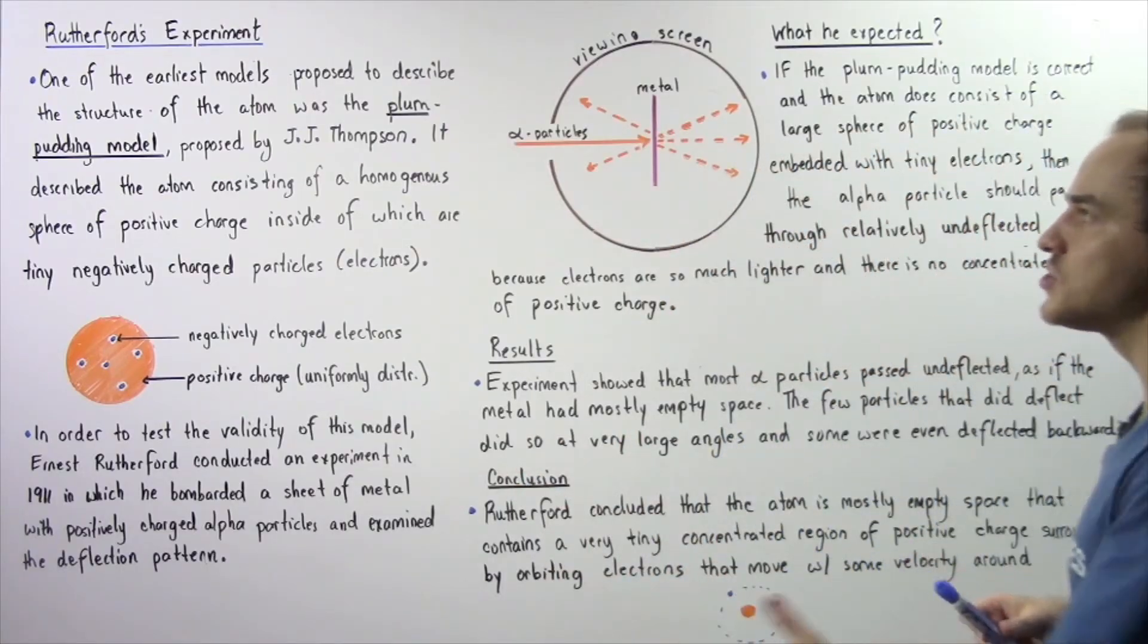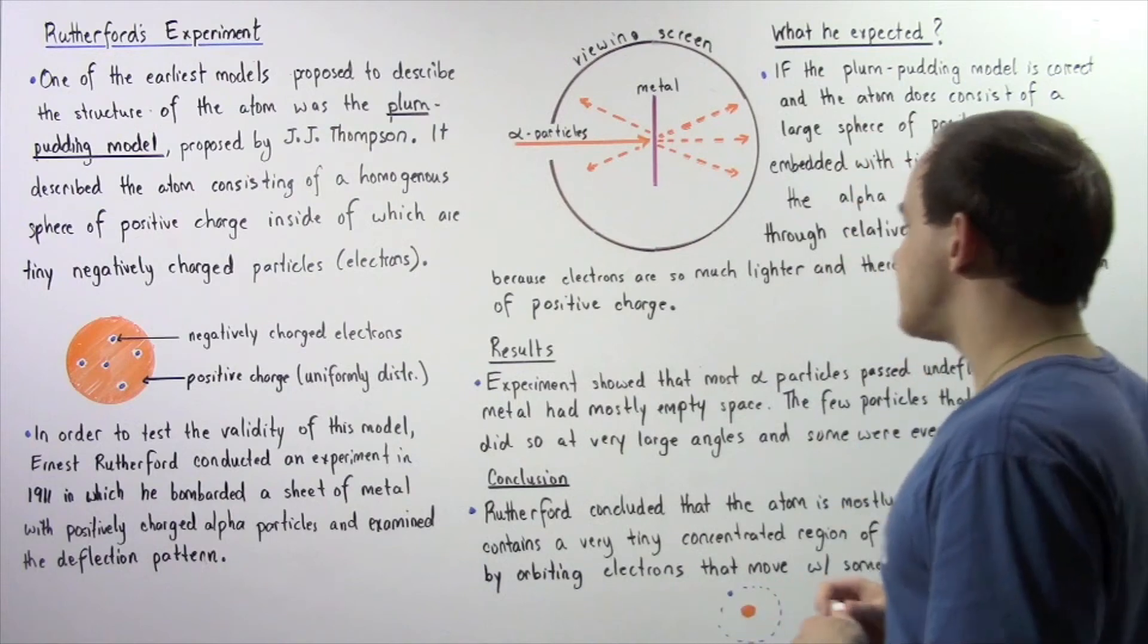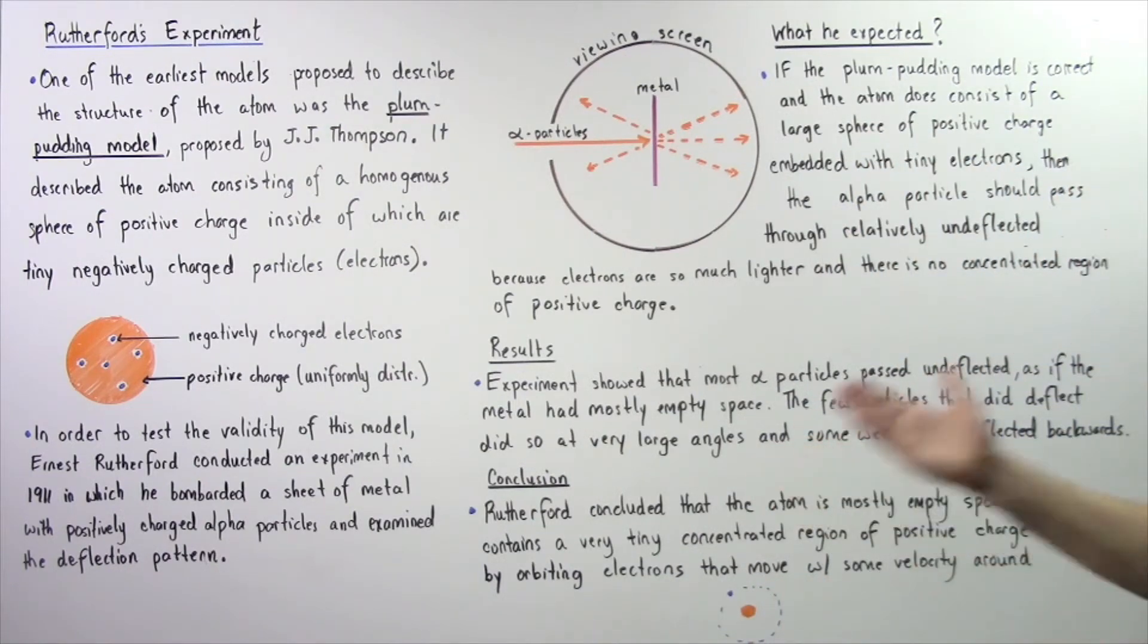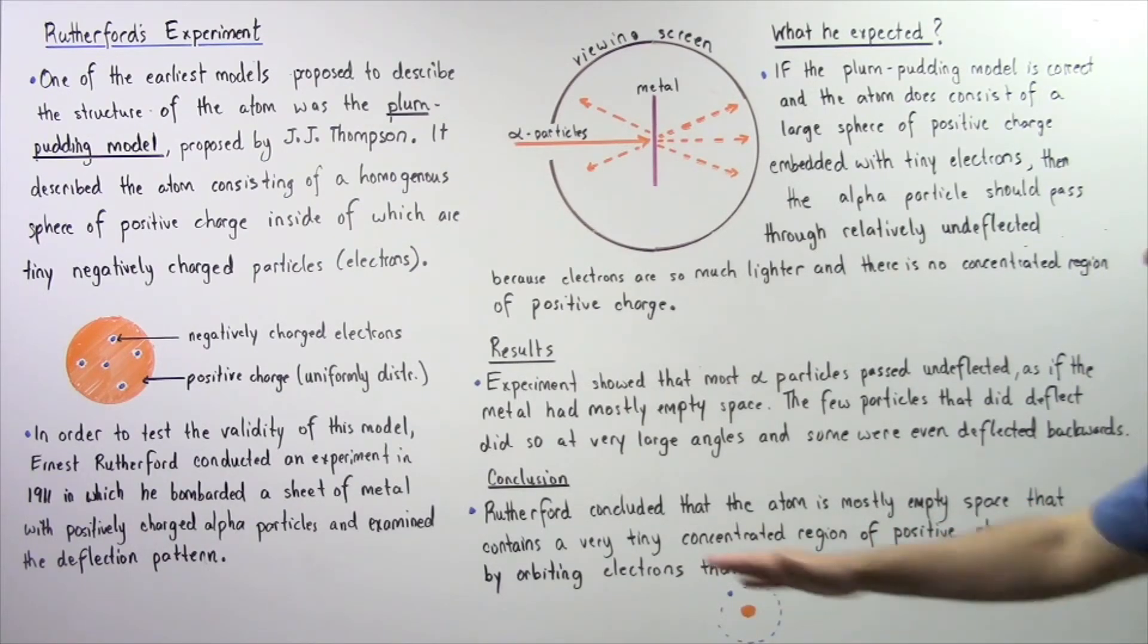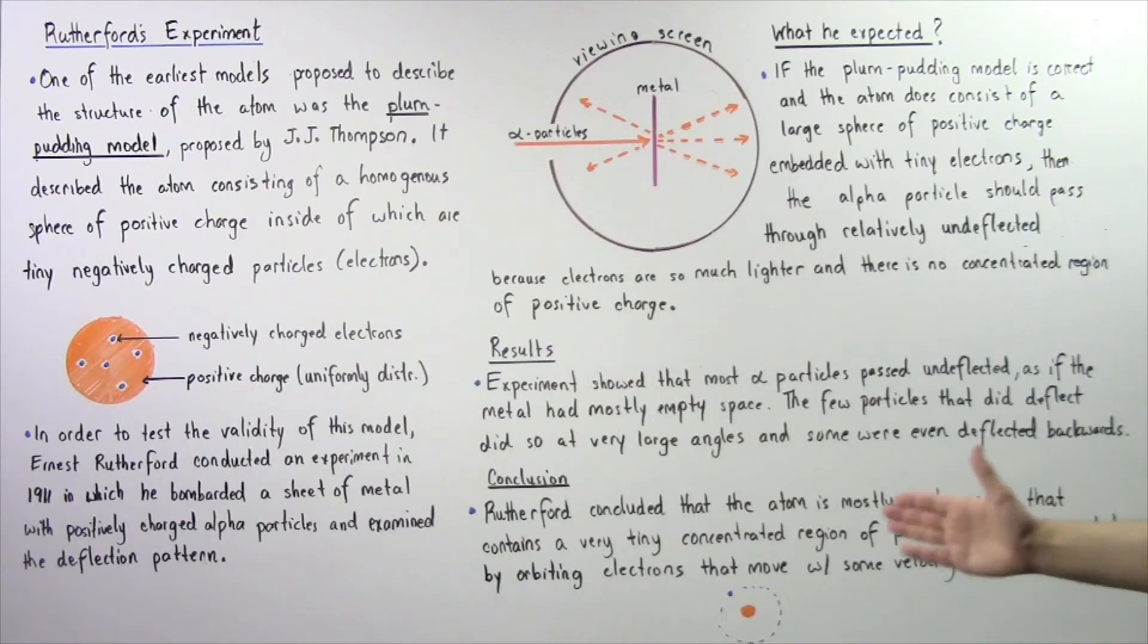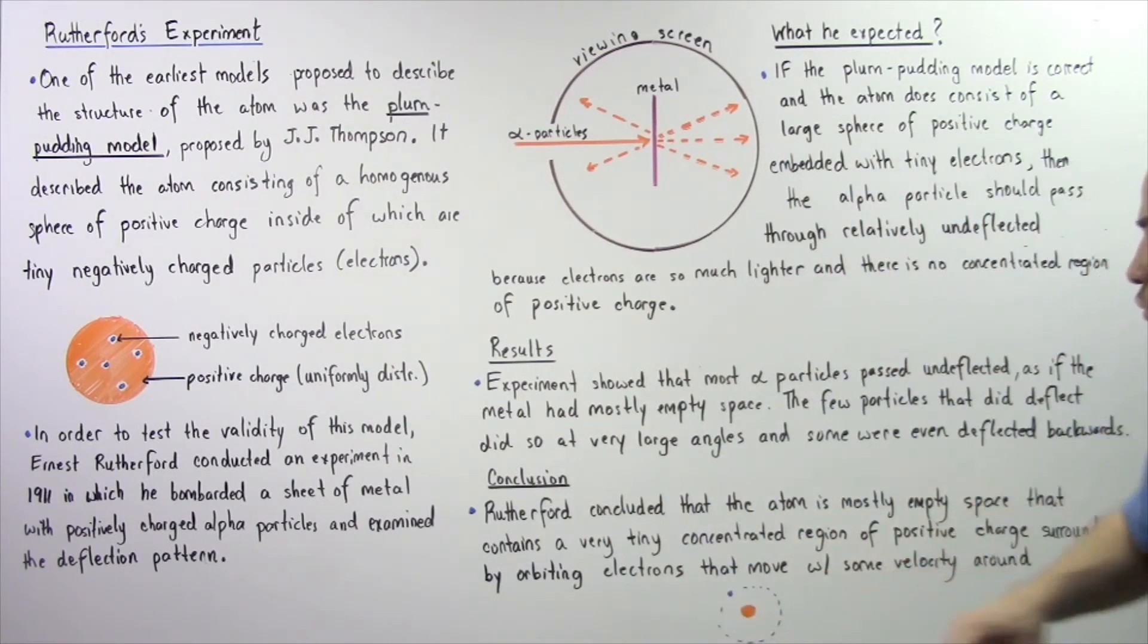What can we conclude from these results, which became known as Rutherford's experiment? Rutherford concluded that the atom is mostly empty space that contains a very tiny concentrated region of positive charge surrounded by orbiting electrons that move with some velocity around in a circular fashion as described in the following diagram.